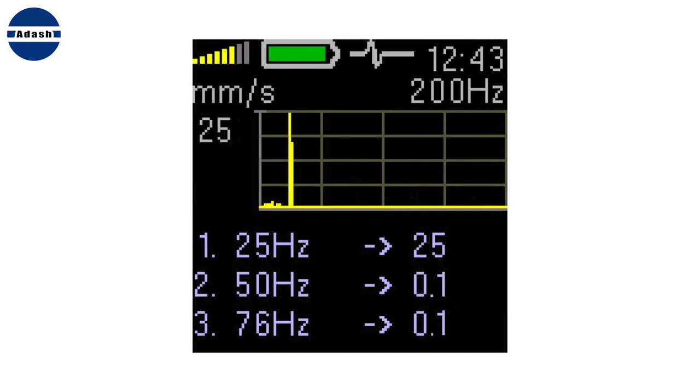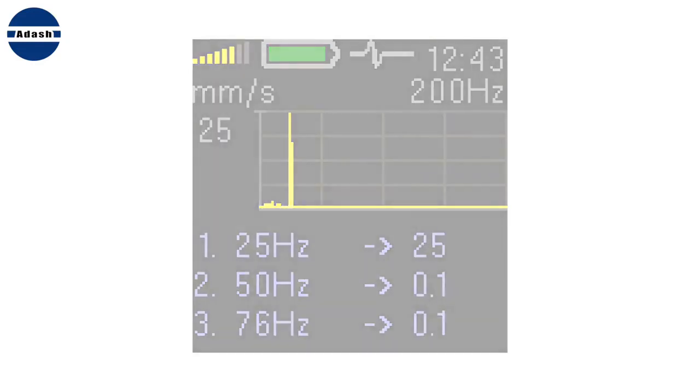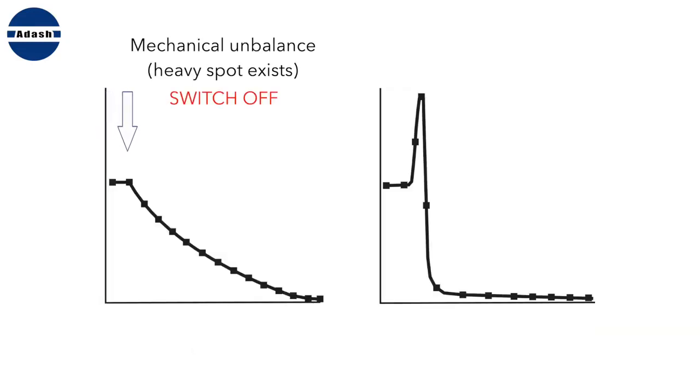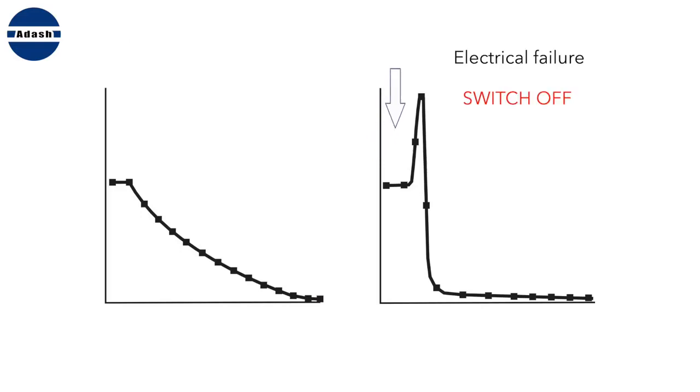The unbalance can be mechanical. Then you will do the balancing job. Or the unbalance can be electrical, of course only for motors. When electrical failure exists, then it also generates only one spectrum line on speed frequency. Fortunately, you can do simple test. Watch the velocity value and switch the motor off. If the velocity value decreases together with speed decreasing, then the mechanical unbalance is the failure. When the velocity promptly drops to almost zero, then it is electrical failure. In this case, the value can increase in the beginning and then drops. It is also normal.